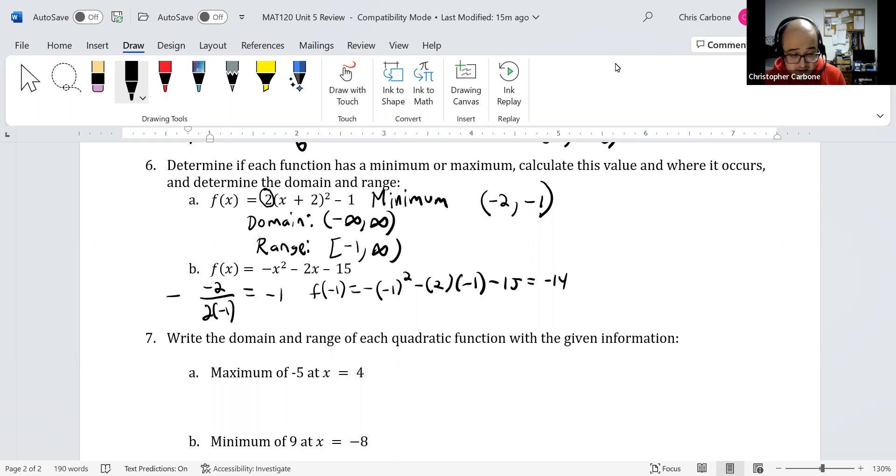Because of this being negative in front of the x², this is going to have a maximum at that point: (-1, -14).